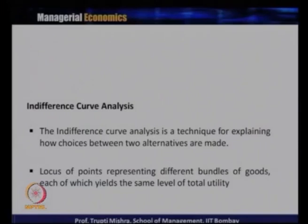To summarize: initially when total utility increases, marginal utility decreases. When total utility is maximum, marginal utility is zero. When total utility is decreasing, marginal utility enters the negative segment. This leads us to ordinal utility analysis, which is conducted through the indifference curve.